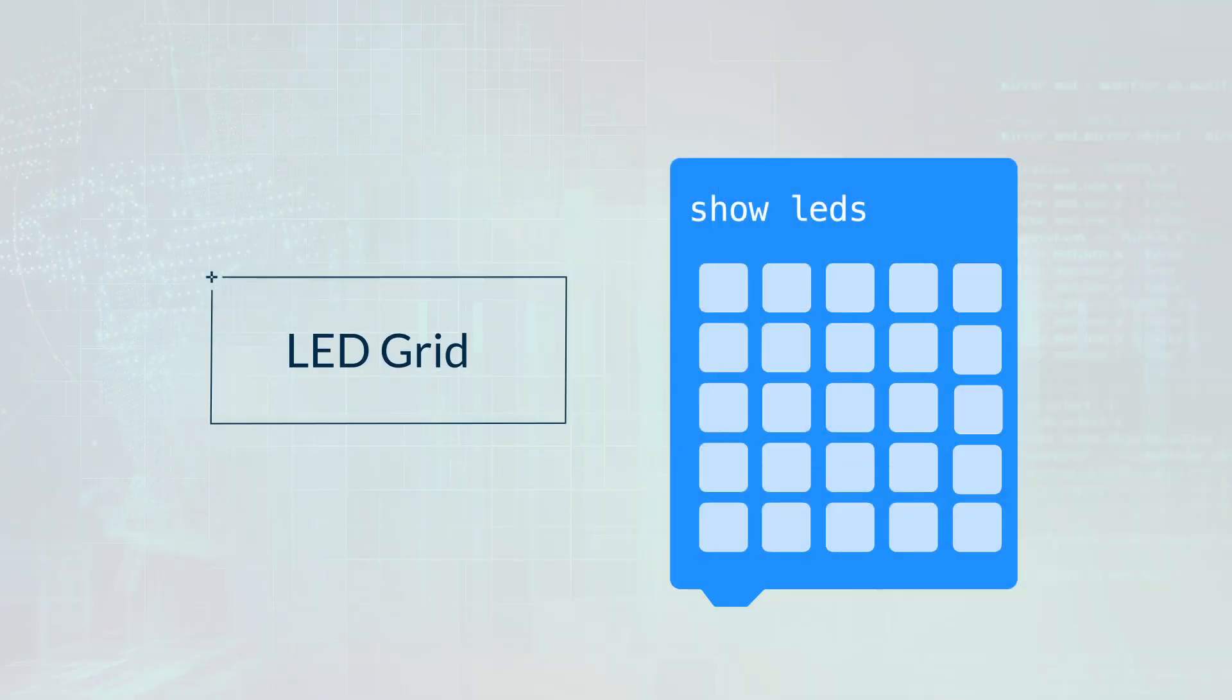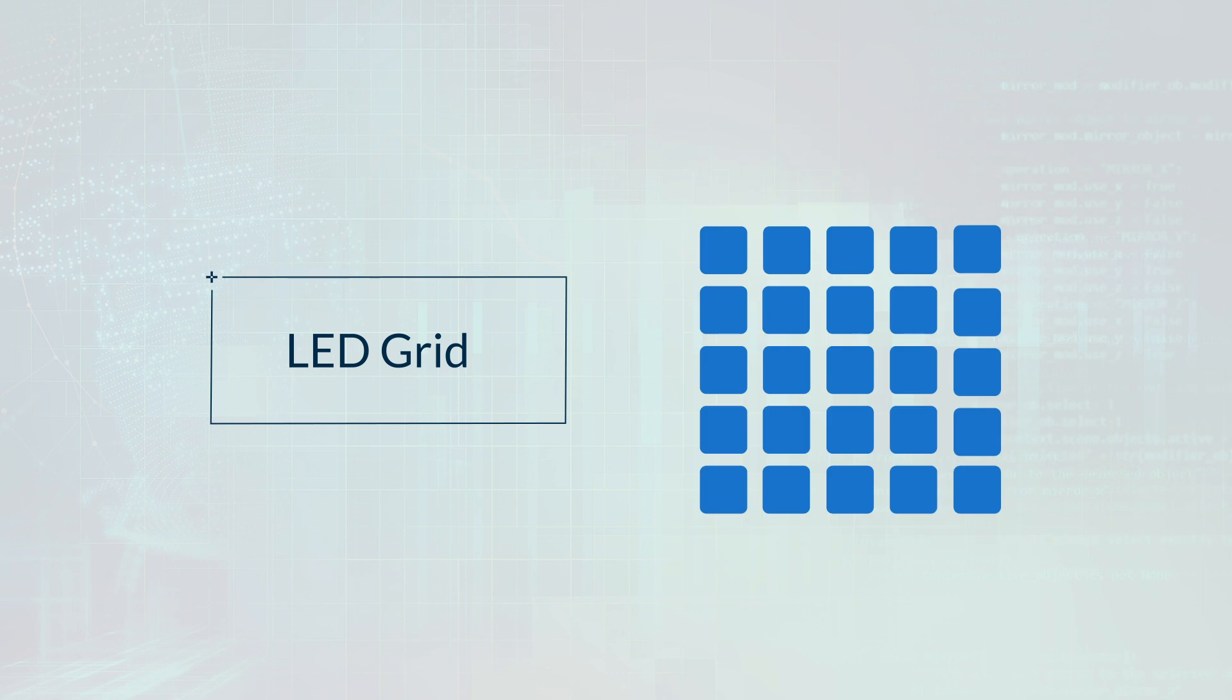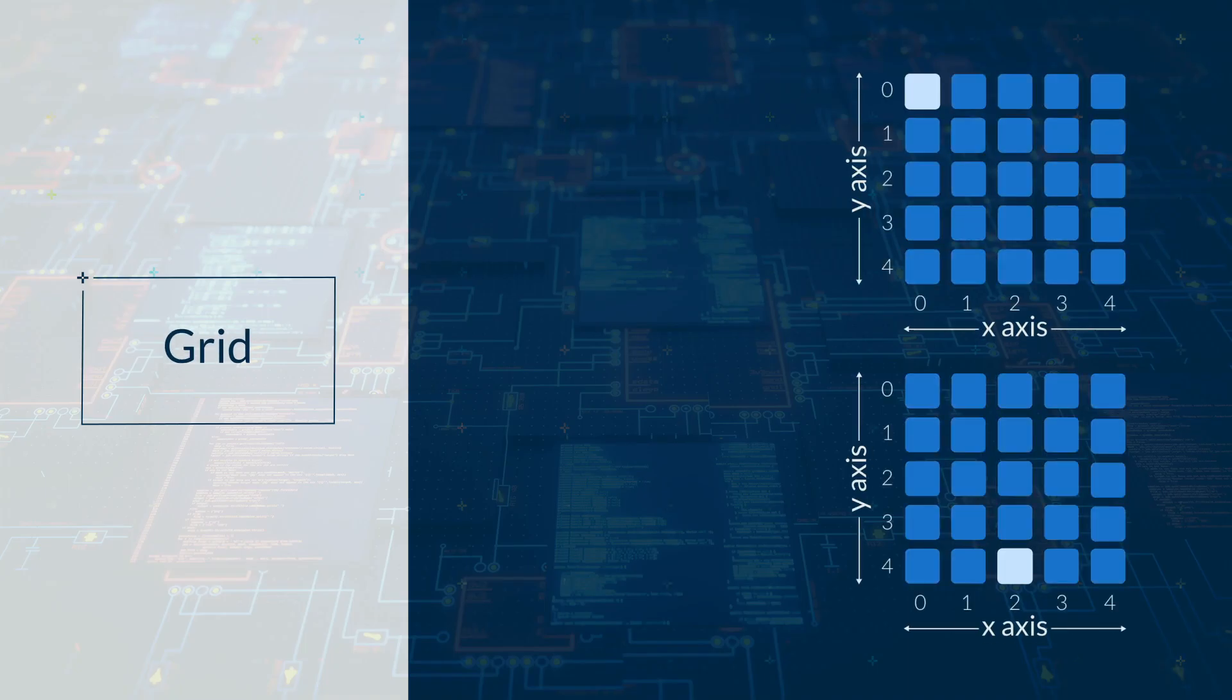The LEDs are set up as a grid. Each LED can be identified by its x-axis position, the horizontal row or across position, and its y-axis position, the vertical column or up and down position.